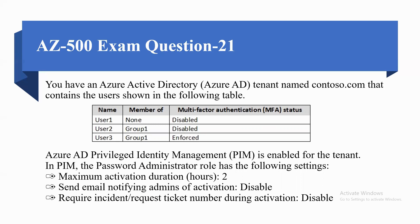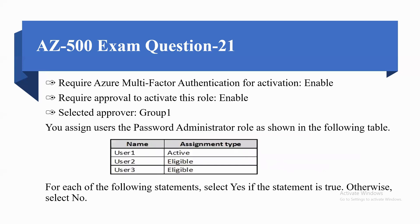Azure AD PIM is enabled for the tenant. In PIM, the Password Administrator role has the following settings: maximum activation duration in hours is two, send email notifying admins of activation is disabled, require incident or request ticket number during activation is disabled, require Azure MFA for activation is enabled, and require approval to activate this role is enabled with selected approver Group 1.